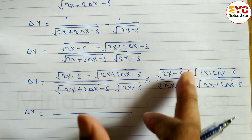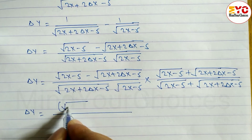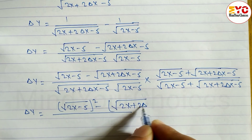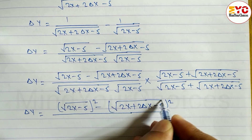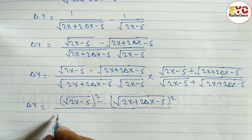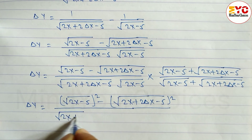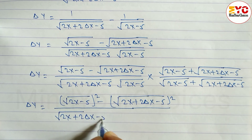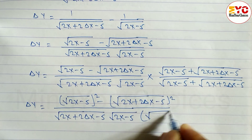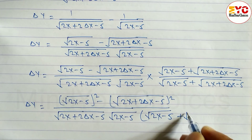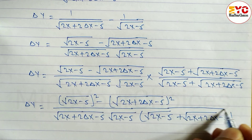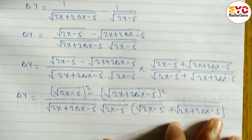Using the (a - b)(a + b) = a² - b² identity, we get: root under (2x - 5) whole square minus root under (2x + 2 del x - 5) whole square in the numerator. The denominator becomes root under (2x + 2 del x - 5) times root under (2x - 5) times the bracket root under (2x - 5) plus root under (2x + 2 del x - 5).